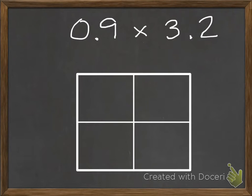Let's take a look at 9 tenths times 3 and 2 tenths. First, you need to set up a diagram as I have below.